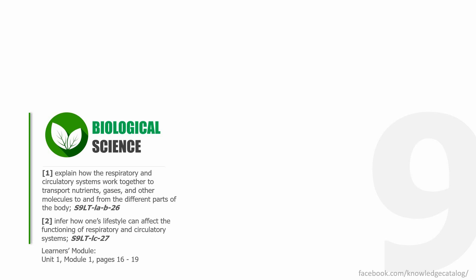The second learning competency, which is new and newly featured in this video, is going to be inferring how one's lifestyle can affect the functioning of the respiratory and circulatory systems. You will need your learner's module, particularly unit one, module one, pages 16 to 19.